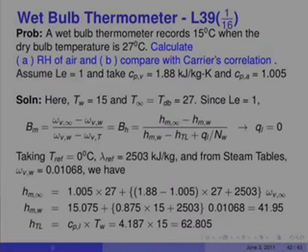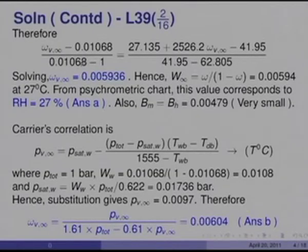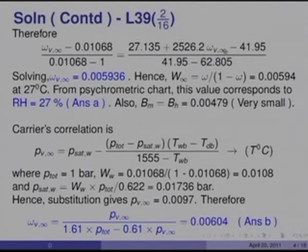H_TL is the enthalpy of the transfer substance — water — in the liquid state just inside the wall surface, equal to C_p_liquid × T_w: 4.187 × 15 = 62.805. Equating B_m with B_h, we obtain the equation: (omega_V_infinity − 0.0168) / (0.0168 − 1) = (27.135 + 2562.2 × omega_V_infinity − 41.95) / (41.95 − 62.805).